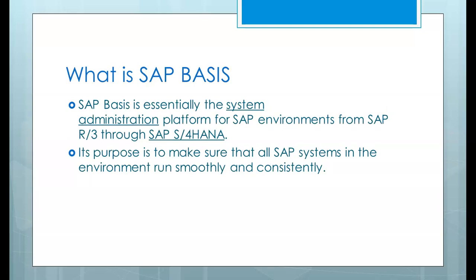SAP Basis is essentially the system administration platform for SAP environments, from SAP R3 through SAP S4 HANA. The latest version is SAP S4 HANA 1909. Its purpose is to make sure that all SAP systems in the environment run smoothly and consistently. It also includes the installation of the software, the maintenance of the software, the login credentials, and the security — all these things come under SAP Basis broadly.